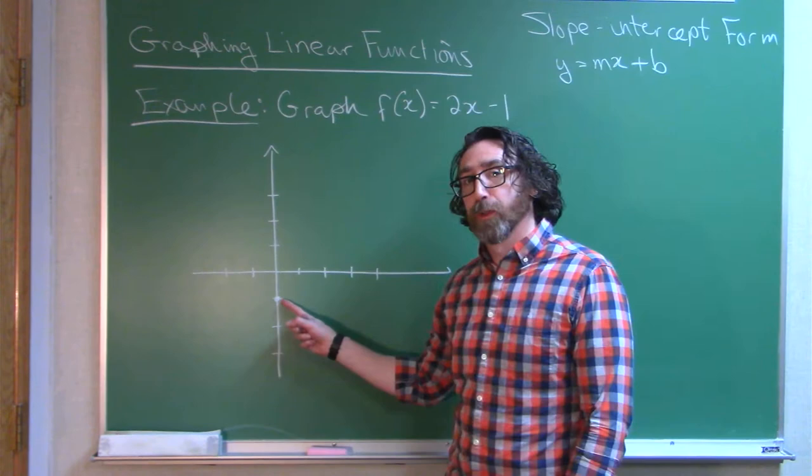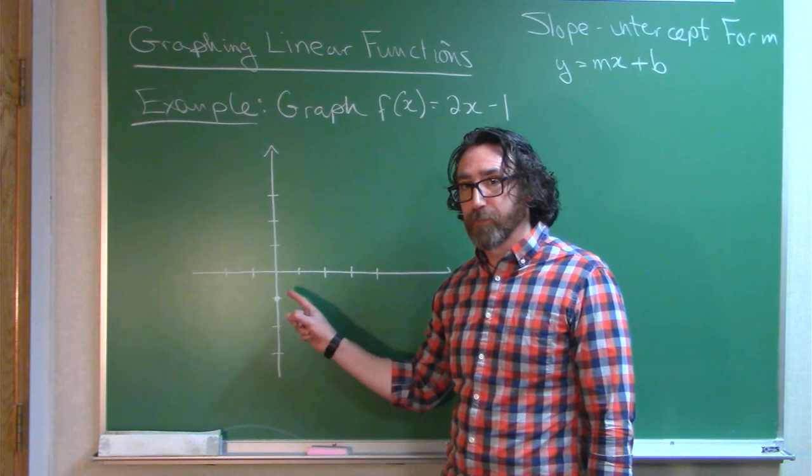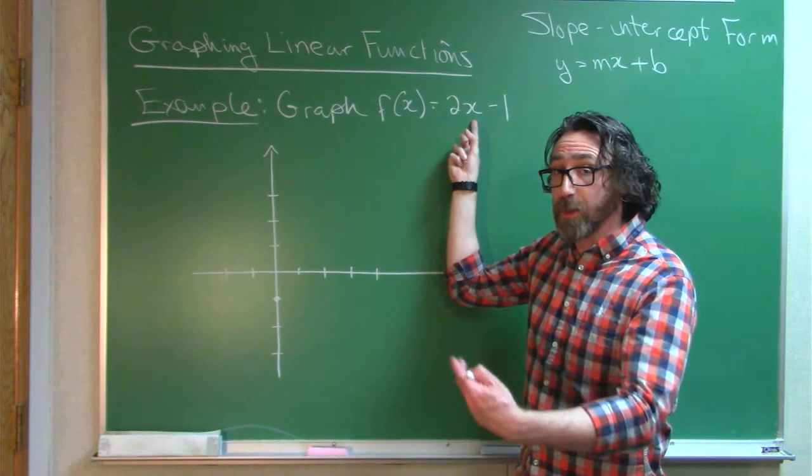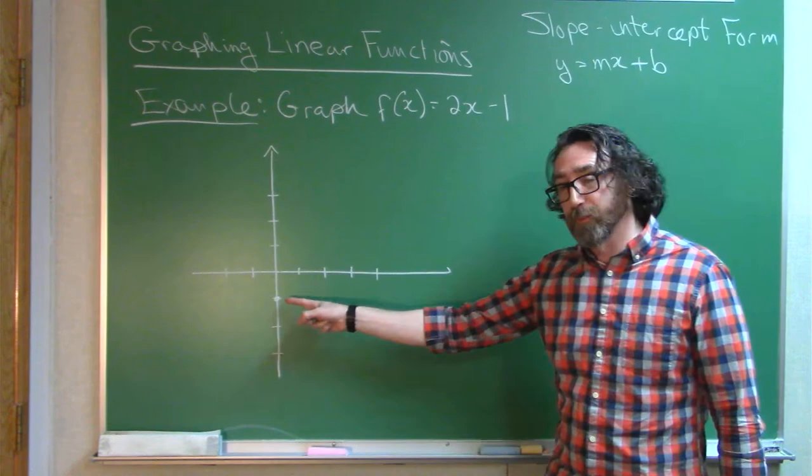The fact that I just plotted (0, -1) on the graph means if I use 0 as my input, I should get negative 1 as my output. Well, if I use 0 as the input here, that means I replace the x on the other side with a 0. 2 times 0 is 0, minus 1 is negative 1. So 0 comes in, negative 1 comes out, (0, -1) is on the graph.